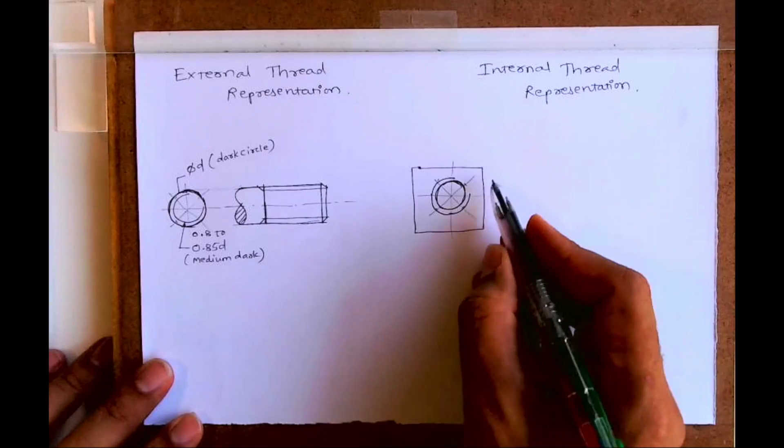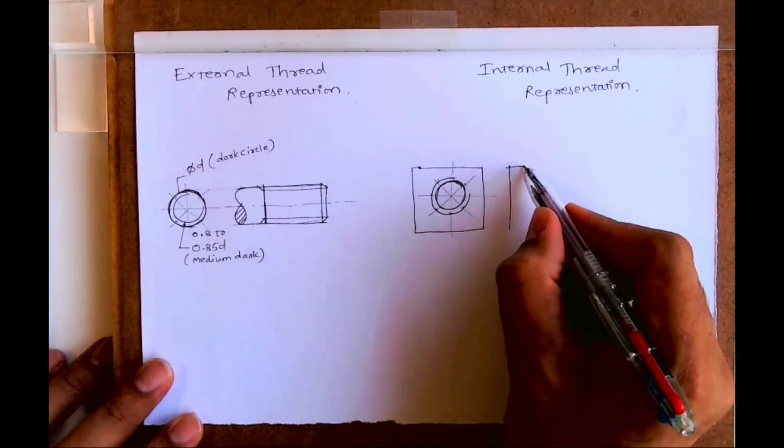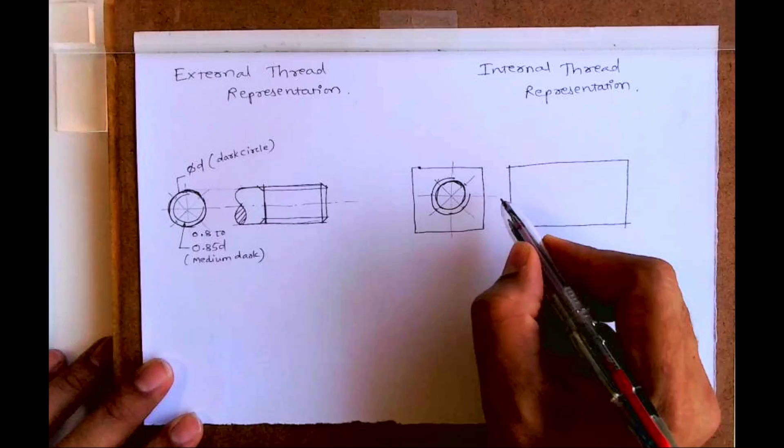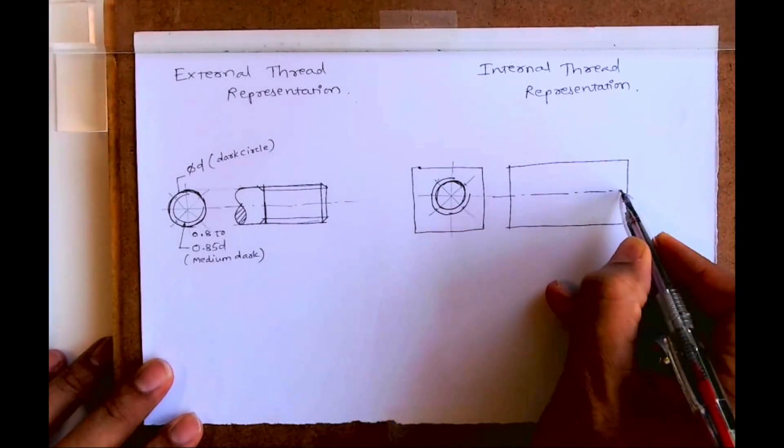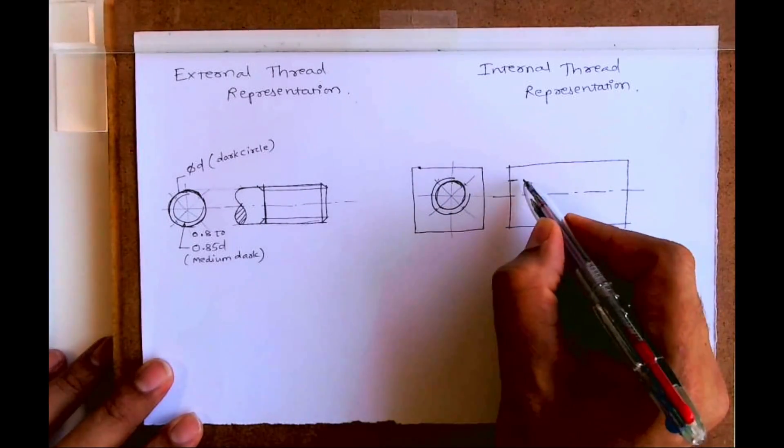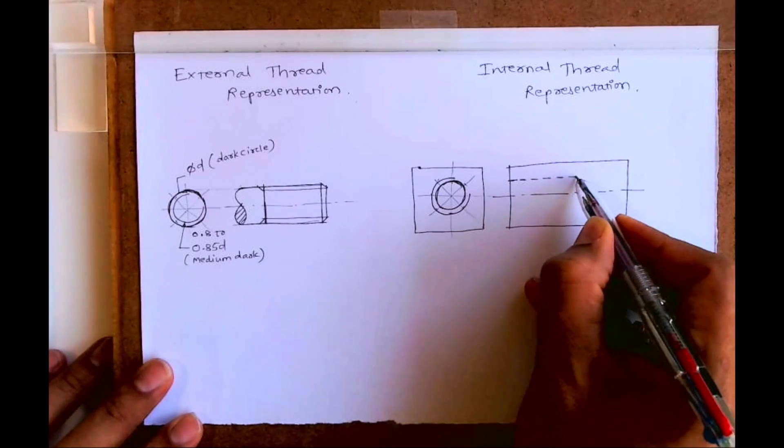It's all about two circles: one is full and one is three-fourths. For internal thread representation, the inner circle will be dark and the outer one will be three-fourths.